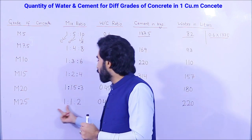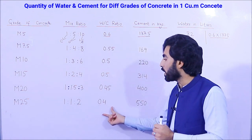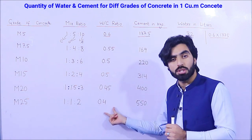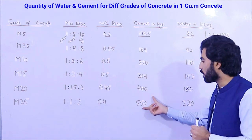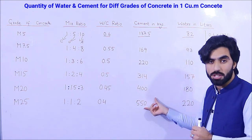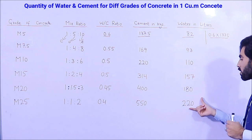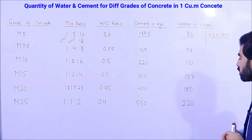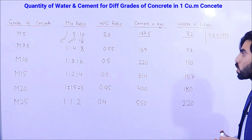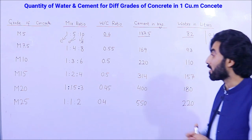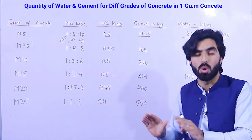For M25 grade concrete, the mix ratio is 1:1:2 and the water-cement ratio is 0.4. You will require 550 kg of cement and 220 liters of water per cubic meter.